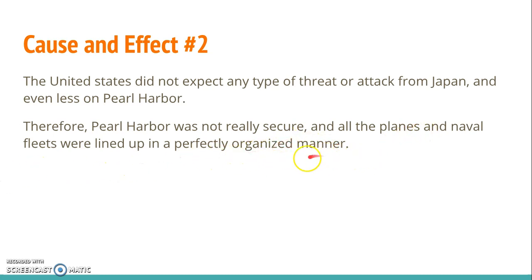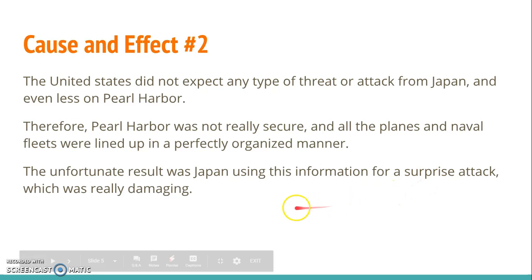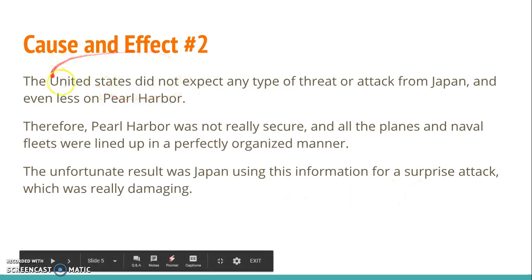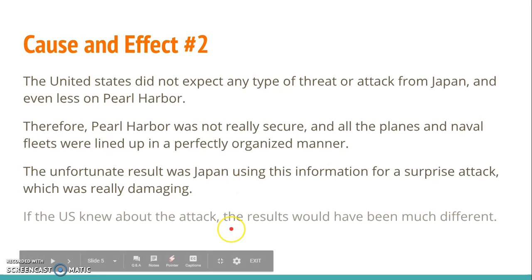Since Pearl Harbor wasn't secure, the planes and naval fleets were lined up in a perfectly organized manner — I'll show you a picture of that in a bit. The actual effect was that Japan used this information to create a surprise attack, since the U.S. wasn't expecting anything. If the U.S. had known about the attack, I believe the results would have been much different.